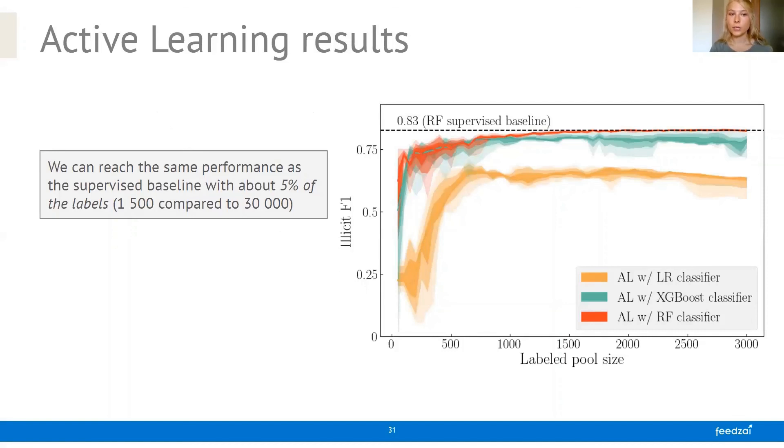The results that we present show that even with a very small number of labels, we can reach the performance of the supervised baseline. So we can see here that the random forest classifier in red using active learning can achieve its supervised baseline with only about 5% of the total labels, which is about 1500 compared to the 30,000 that we used in the supervised baseline. However, something that we saw is that even if we use random sampling at each iteration, we get similar results. So a similar improvement of performance very quickly.